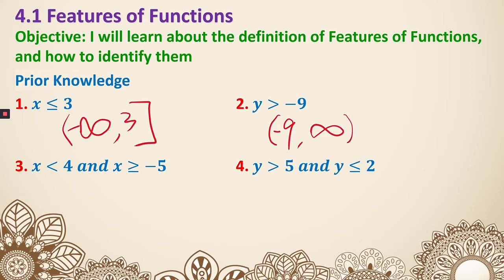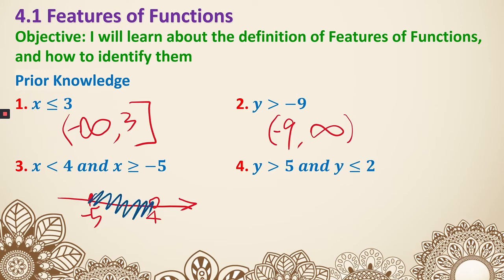Next, x is less than 4 and x is greater than or equal to negative 5. This one is slightly tricky. Let's draw it on the number line first. Negative 5 and 4 are our points. Less than 4 has no equal sign, so we use an open circle. Greater than or equal to uses a closed circle. Now we can write it as interval notation: it starts from negative 5 with a square bracket, going to 4 with parentheses.